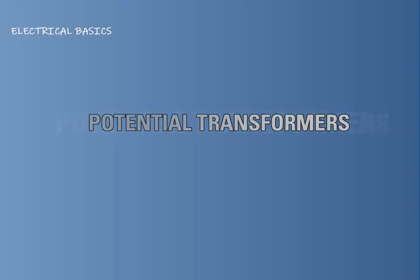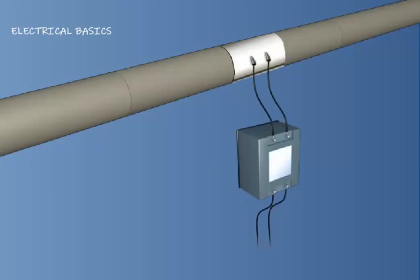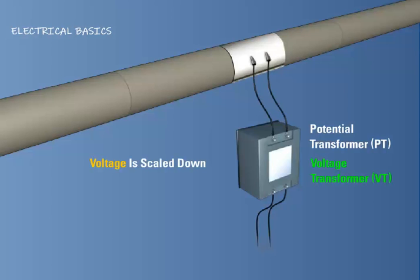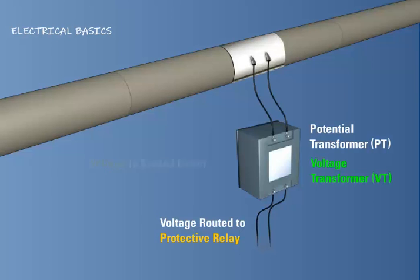The next type of transformer we will cover is the potential transformer, symbolized as PT, or sometimes known as voltage transformers, symbolized as VT. Similar to current transformers, potential transformers scale down the voltage passed through them, as opposed to current. The scaled-down voltage is then routed to a protective relay for measurement. A PT is classified with a conversion ratio indicating the amount the primary voltage is scaled down.